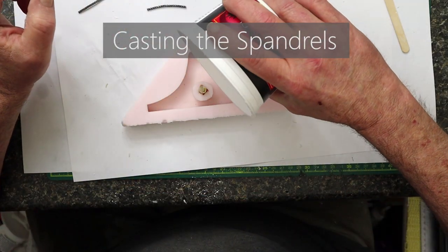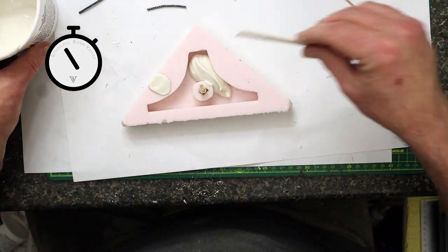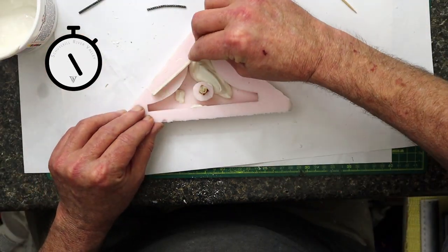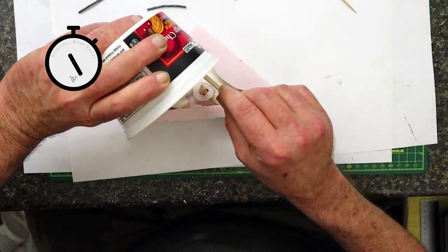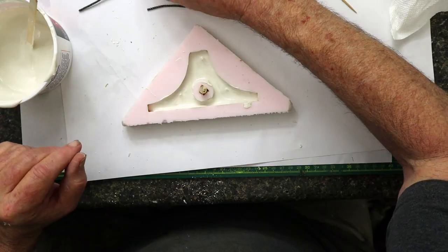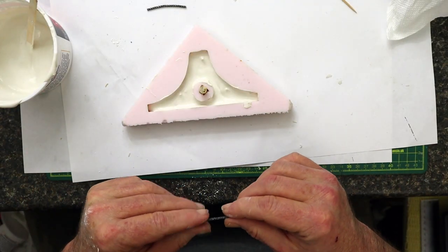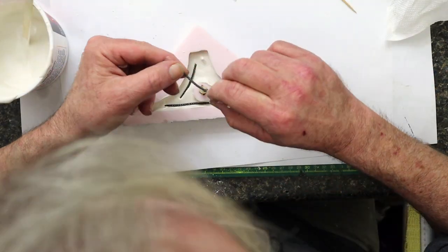I start by filling the mold about halfway full. Since the top is so thin, I used some braided, heavy-duty mirror hanging wire as rebar.